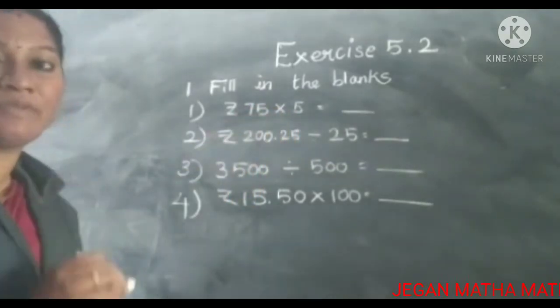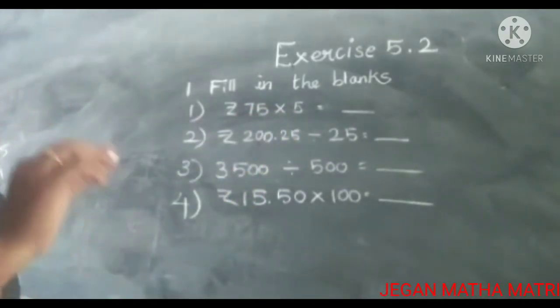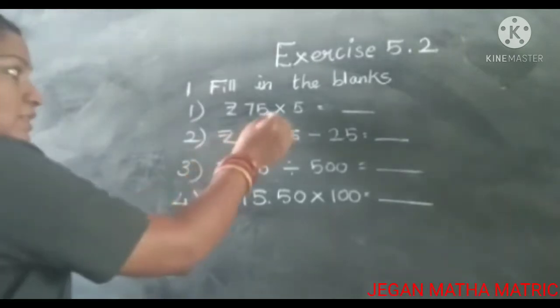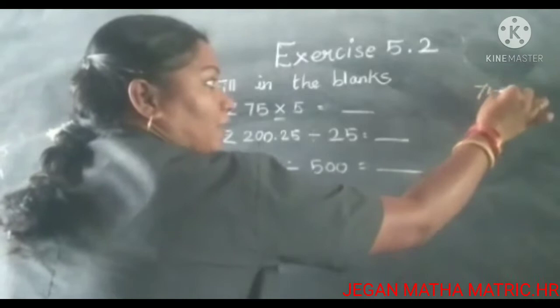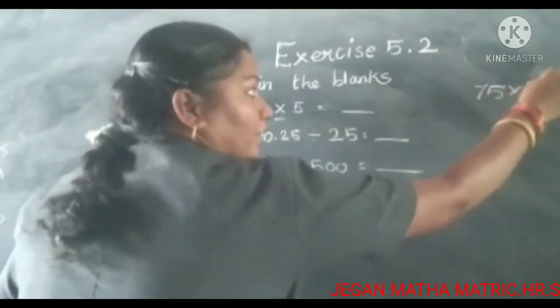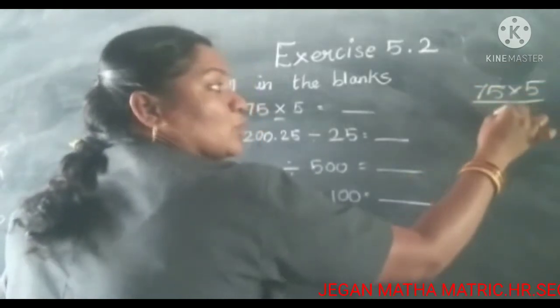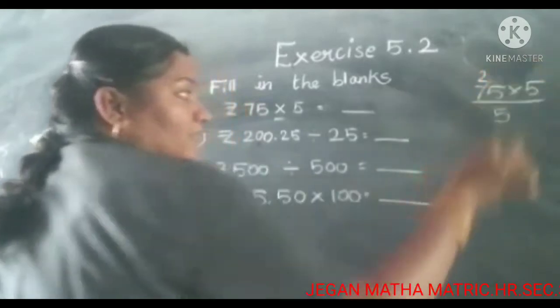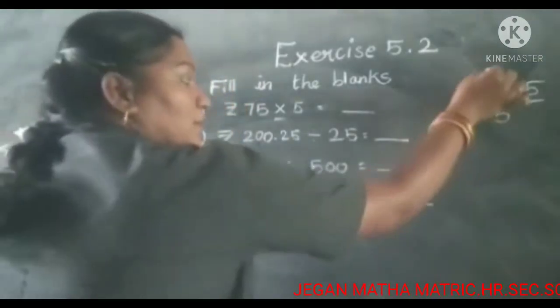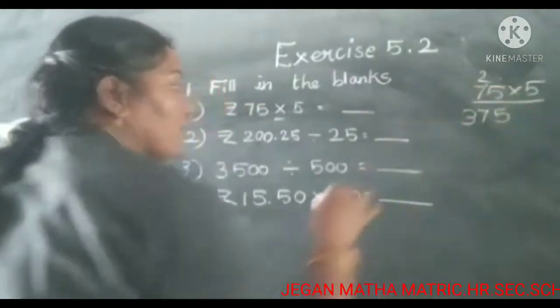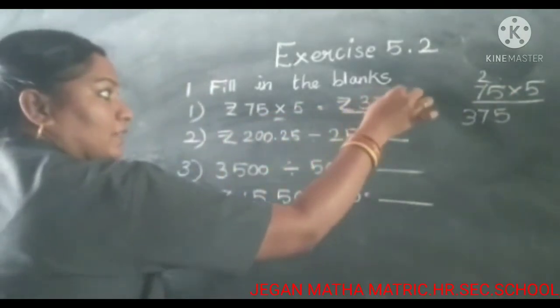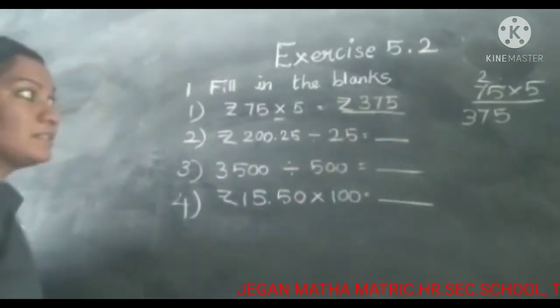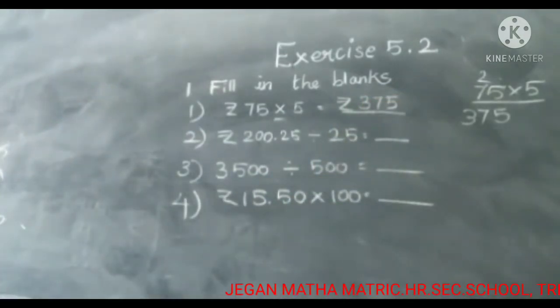The first one, 75 rupees multiplied with 5. See the symbols here. 75 multiplied with 5. More than 5 is 0. 25 and 75 is 0. 35 plus 2, 37. So the answer is 375 rupees.